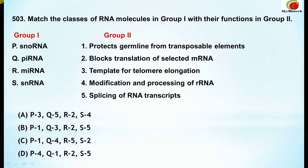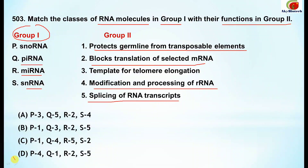Question 503: Match the classes of RNA molecules in group one with their functions in group two. The four classes are: small nucleolar RNA (snoRNA), piRNA, miRNA, and snRNA. The correct option is D: snoRNA is involved in modification and processing of rRNA; piRNA protects germ lines from transposable elements; miRNA blocks translation of selected mRNA; and snRNA is involved in splicing of RNA transcripts.